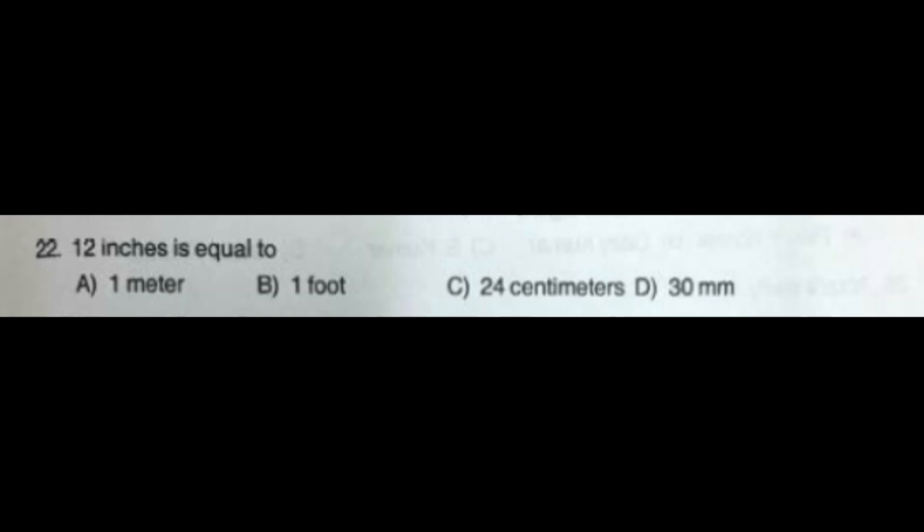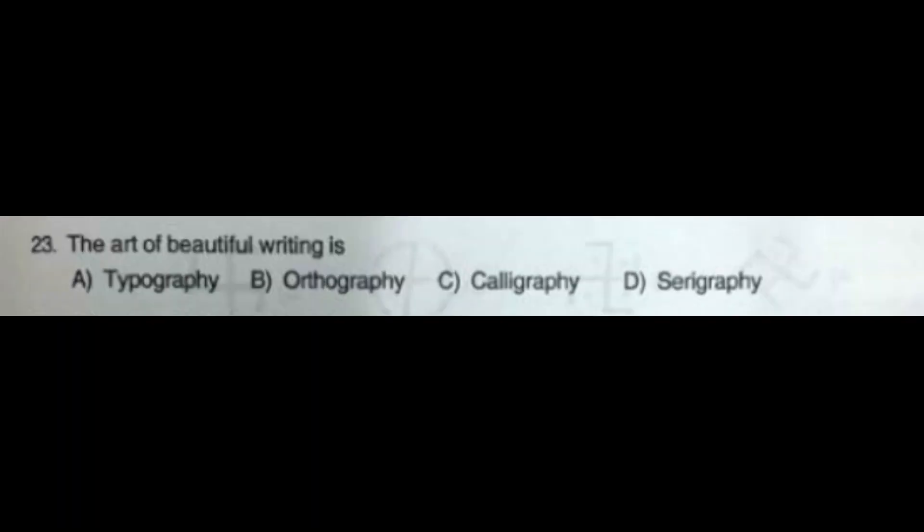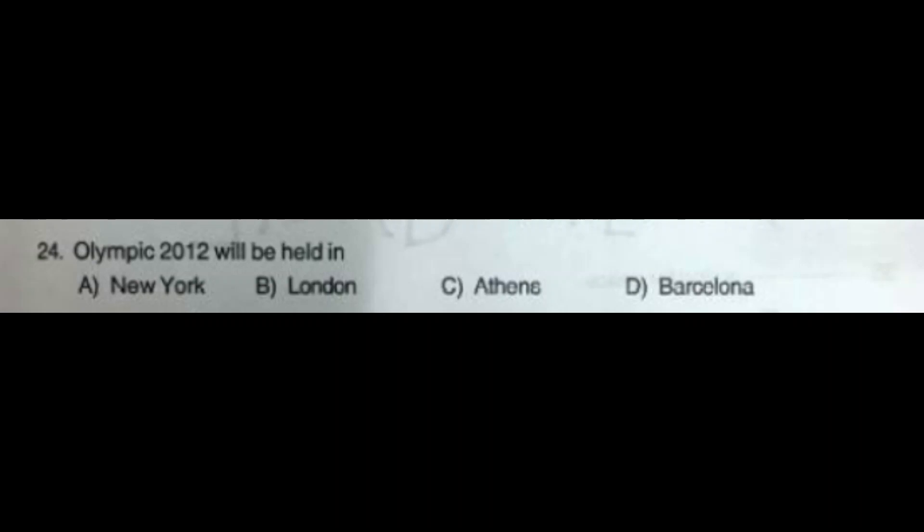Question number 23: The art of beautiful writing is — option A: Typography, option B: Orthography, option C: Calligraphy, option D: Serigraphy. The correct answer is option C: Calligraphy. Question number 24: Olympics 2012 will be held in — option A: New York, option B: London, option C: Athens, option D: Barcelona.